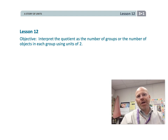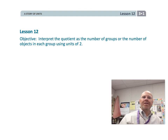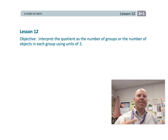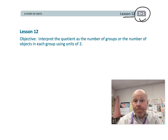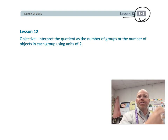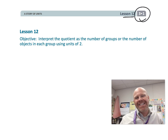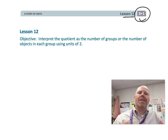Alright, this is third grade, module one, lesson 12. In this lesson, students are going to be interpreting the quotient as a number of groups, or as the number of objects in each group. The idea is we're going to be sticking with the number two.